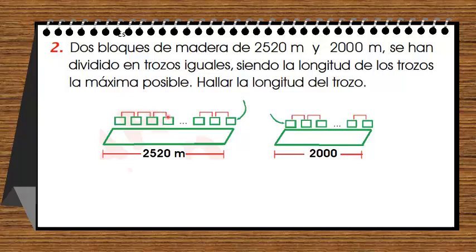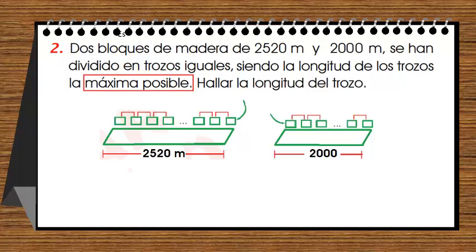Hay que tener en cuenta la palabrita clave: 'máxima posible'. Analizando, vamos a sacar el máximo común divisor. No vamos a sacar el mínimo común múltiplo de dos mil quinientos veinte y dos mil, porque el mínimo común múltiplo sería un número grande. Por el contrario, va a ser el máximo común divisor de dos mil quinientos veinte y de dos mil.